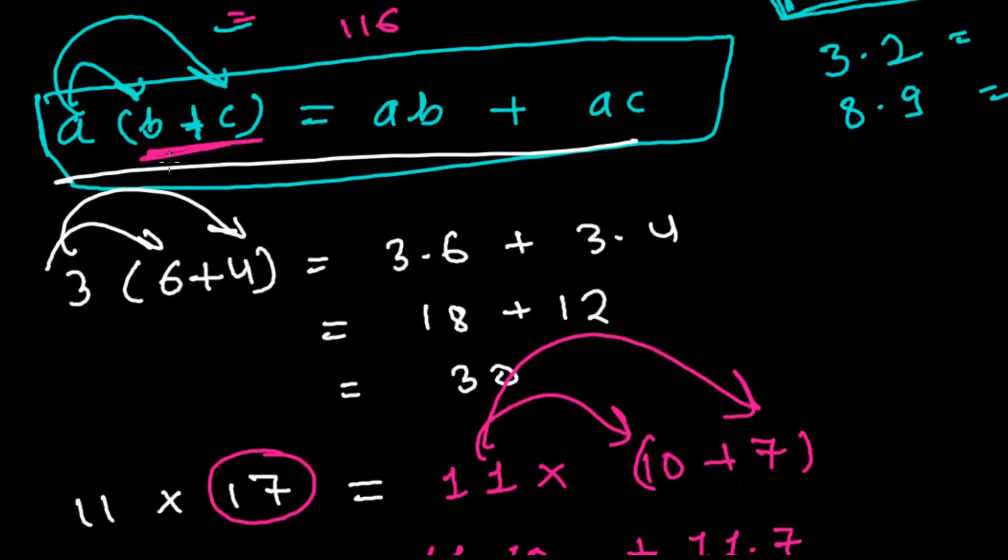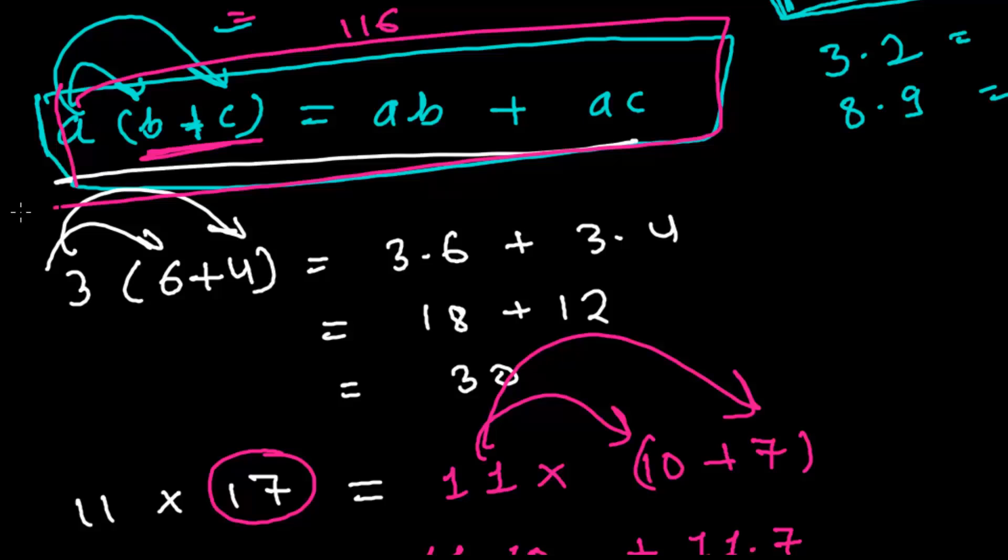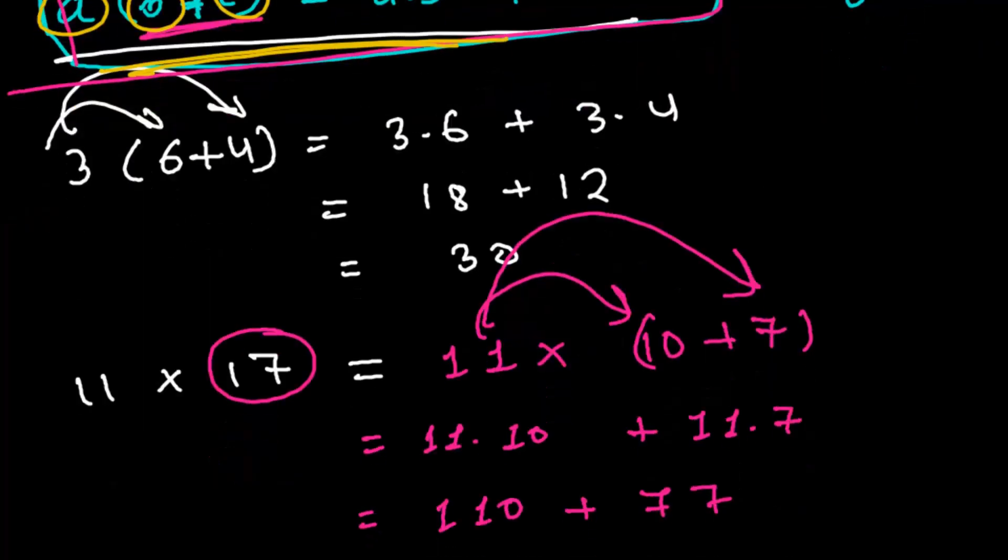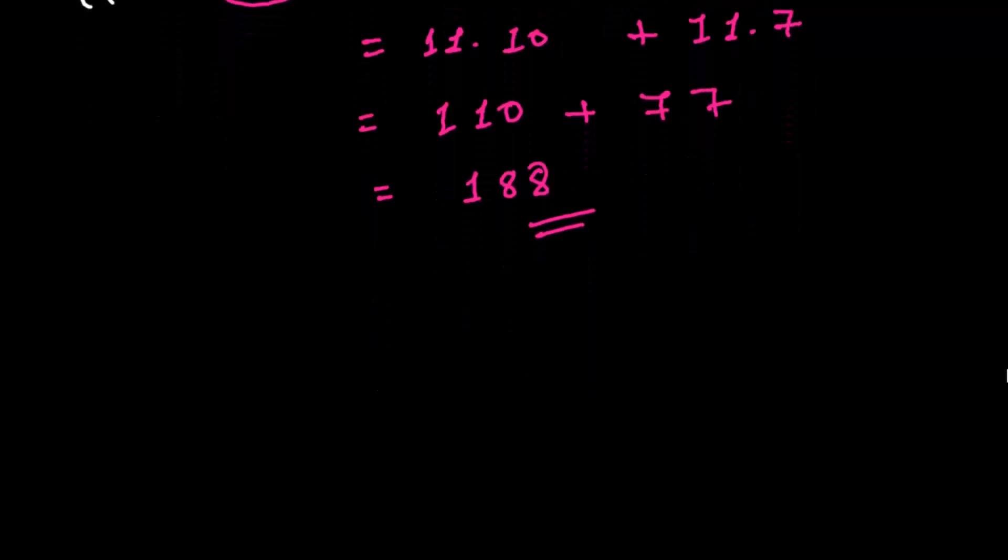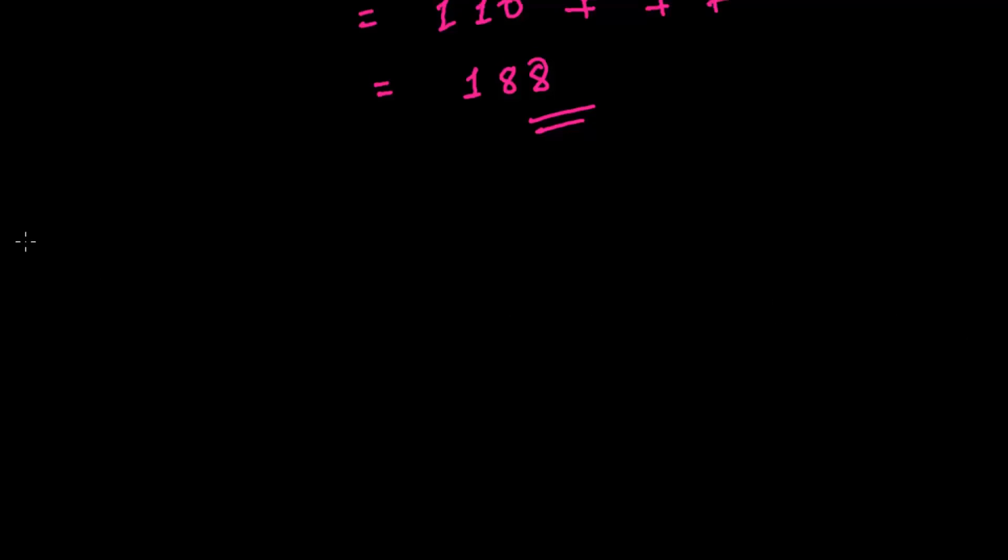So this is the generalized form of the variables. So variables, it means you can change the value of A, B, and C to any number. Any number you select and you can apply this rule. See, the things are getting more powerful. I told you algebra is going to make your whole mathematics or whole life very, very easier. Trust me. You just have to learn how to apply them. And that you're going to master very soon, in few weeks or months.